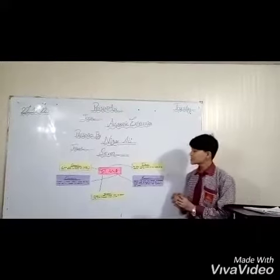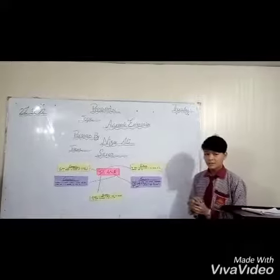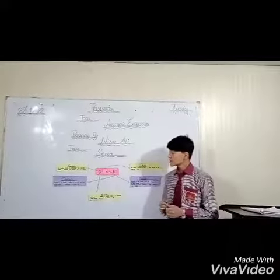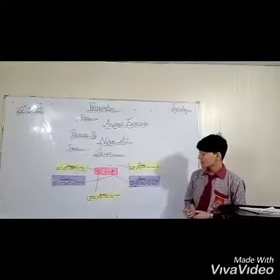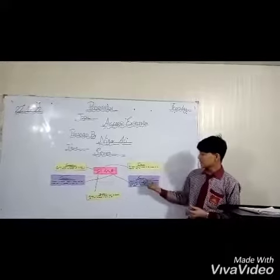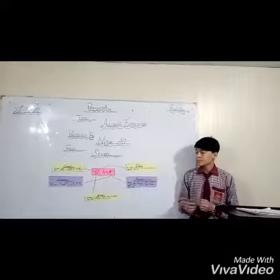In algebraic expression, we have five parts: first, coefficient; second, constant; third, variable; and fourth, exponent and degree.